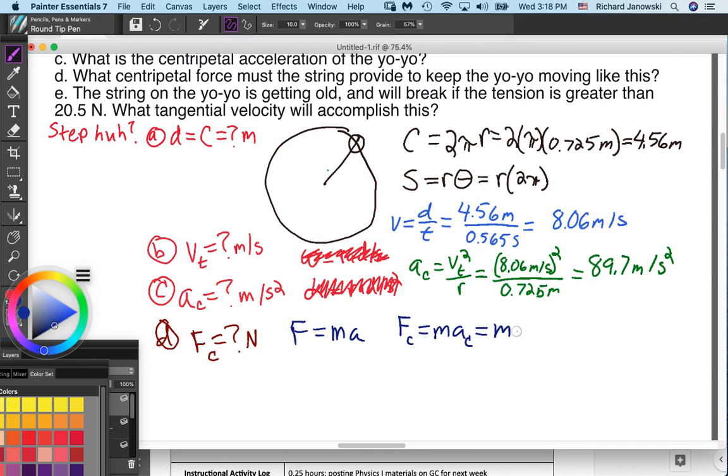So that's equal to M times A centripetal. We could do Vt squared over R, but we actually already found the number right there. So let's just go with the mass of our yo-yo, which is 0.160 kilograms, times our centripetal acceleration. Force centripetal ends up being 14.3 newtons. So we solved for the right thing with the right units.